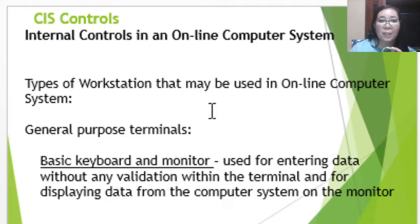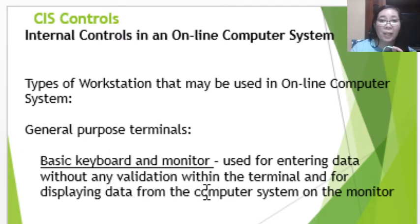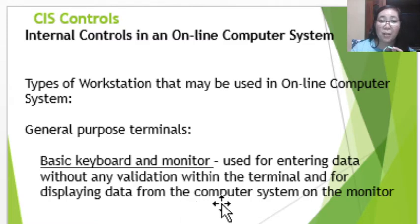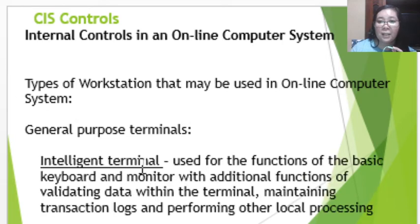There are different types of workstations used in online computer systems. General purpose terminals consist of a basic keyboard and monitor only, used for entering data without any validation within the terminal and for displaying data from the computer system. Intelligent terminals perform all functions of a basic keyboard and monitor with the additional function of data validation within the terminal.